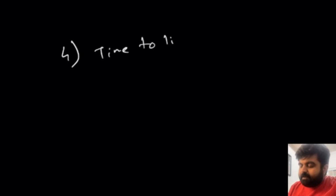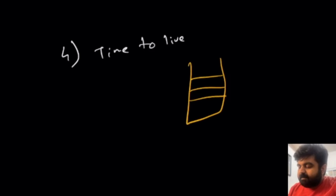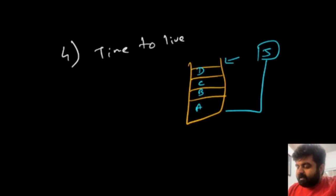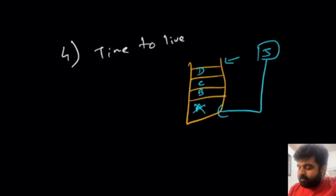The next caching policy is Time To Live, or TTL. In this mechanism, for every element in the cache, we don't care how many times it was used. All we care about is when it was entered into the cache. We set a policy — for example, after every five minutes we get rid of that element. So after five minutes, we remove value A and add a new entry. This is a straightforward policy, easy to understand from the name.